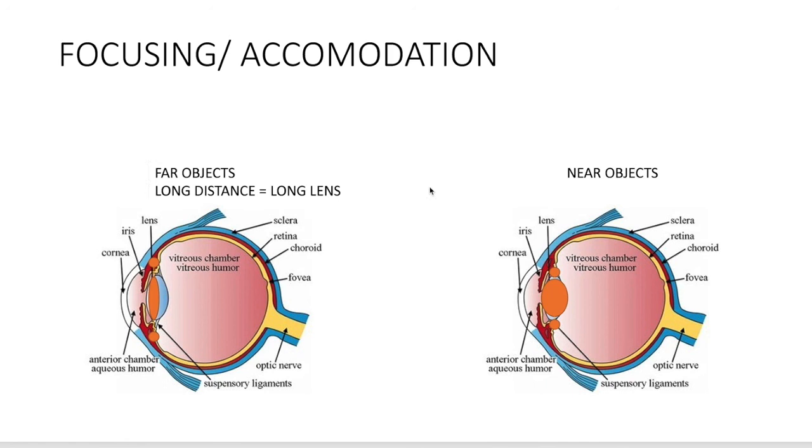And of course, on the other hand, if you're looking at near objects, your lens will become short. In this case, the ciliary muscles will contract. As a result, the lens becomes shorter or thicker. This allows the light to be refracted into the fovea.